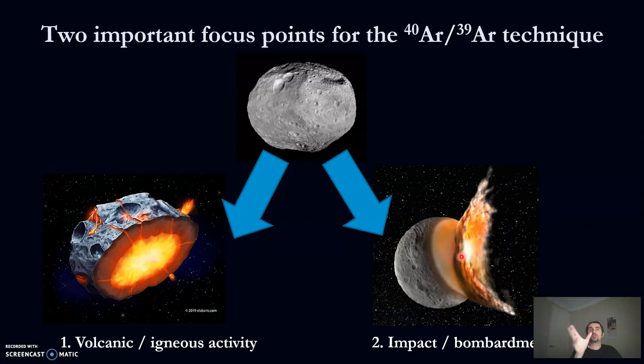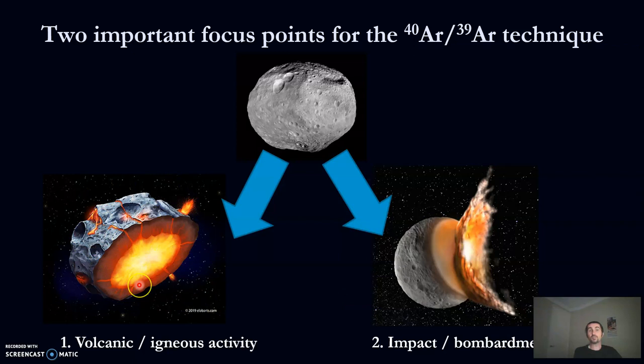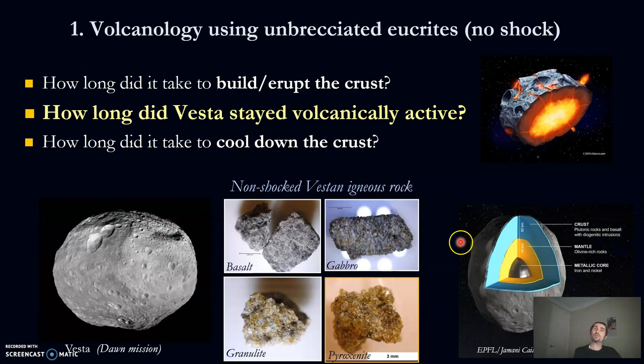The Argon-Argon technique is really good to study basalt. You can do two things in space with Argon-Argon: you can date volcanic activity or the cooling of a volcanic event, or you can date impacts. The thing is, you can't date both on the same rock. If you have an impact, it's going to reset the isotopic clock. So either the rock is pristine and you can date volcanic activity, or it's been reset by an impact. We want to focus on rocks called unshocked, which means they record the volcanic history of the asteroid.